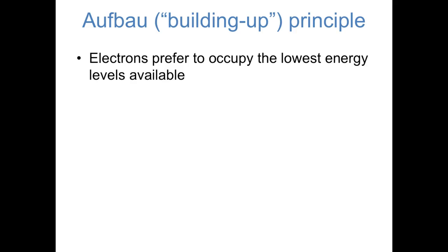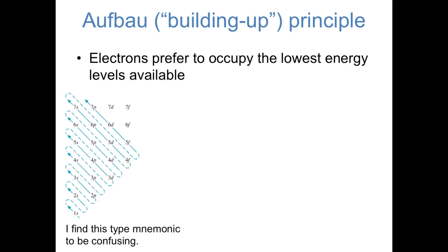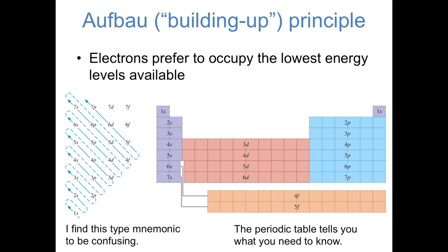I'd also like to remind us of the Aufbau principle — the idea that in the ground state of an atom or molecule, electrons prefer to occupy the lowest energy orbitals available. Textbooks often have mnemonics for remembering what orbitals fill in what order, but really all we need is the periodic table. The left two columns correspond to the filling of s orbitals, the six columns on the right in the main group correspond to p orbitals, the transition metal block corresponds to d orbitals, and the lanthanides and actinides correspond to f orbitals.